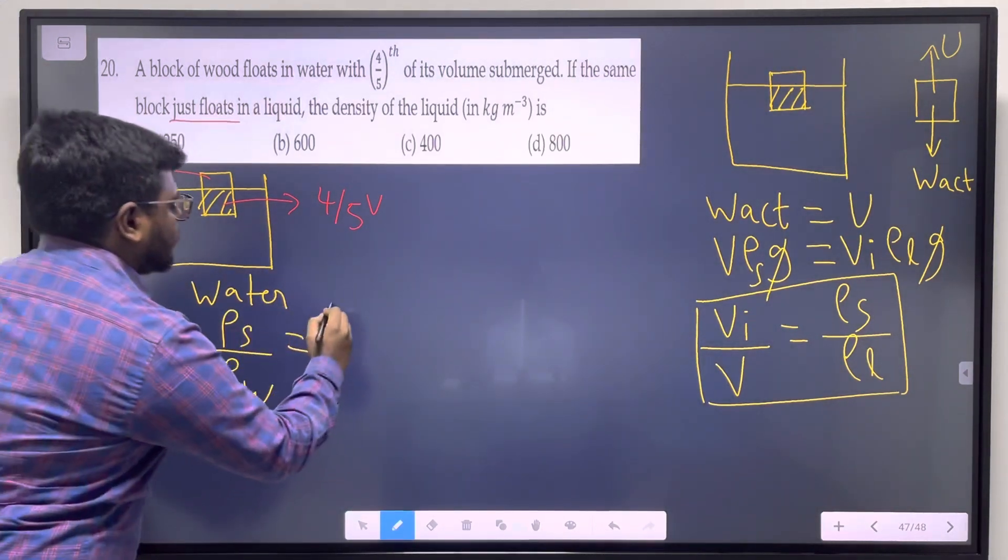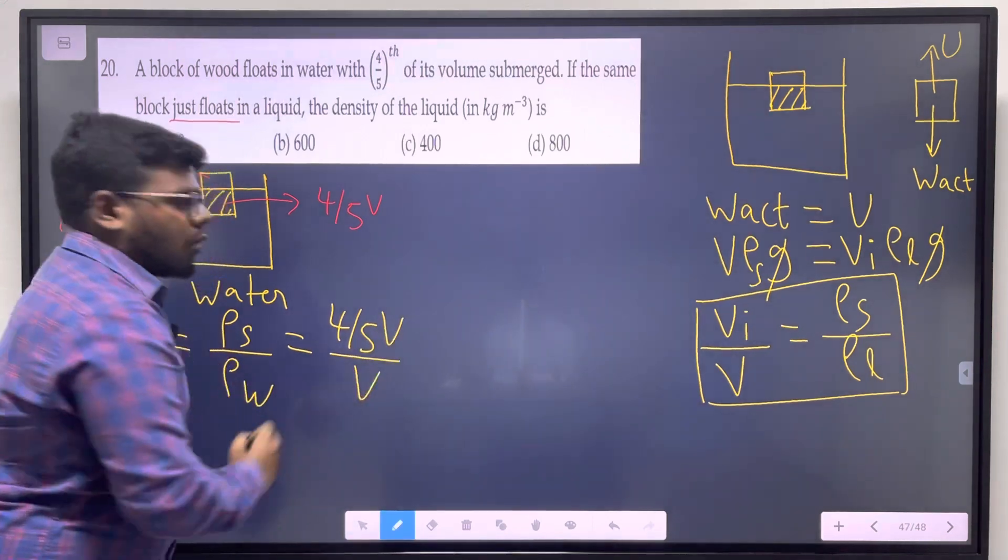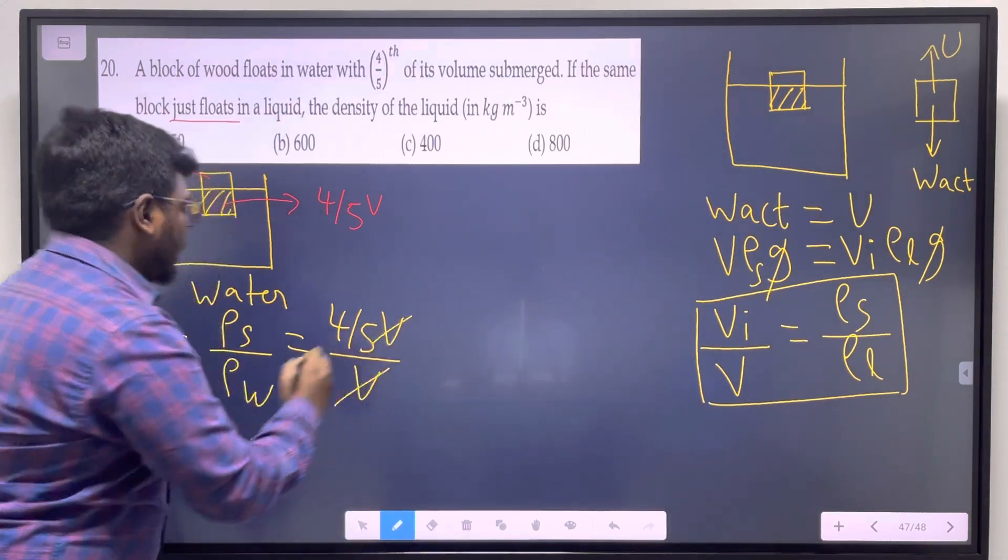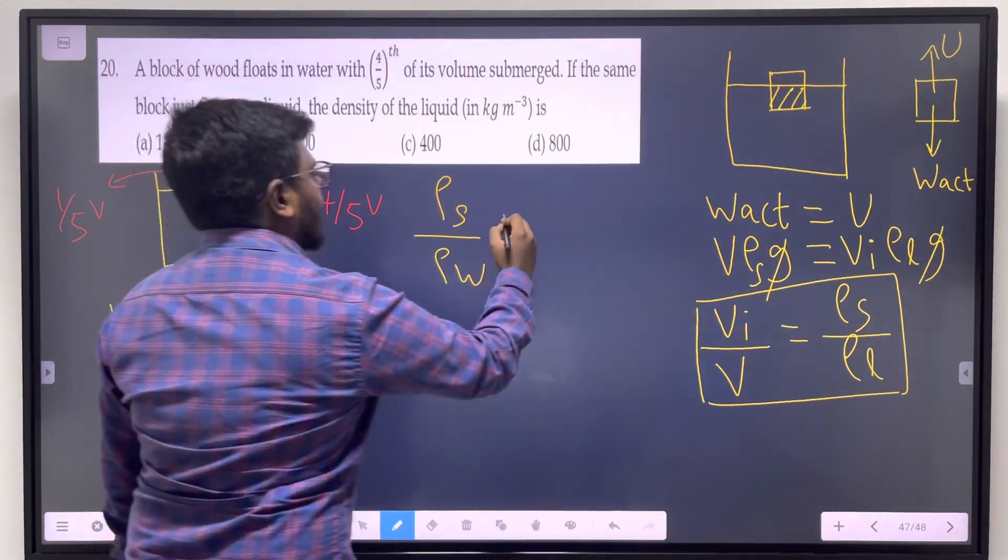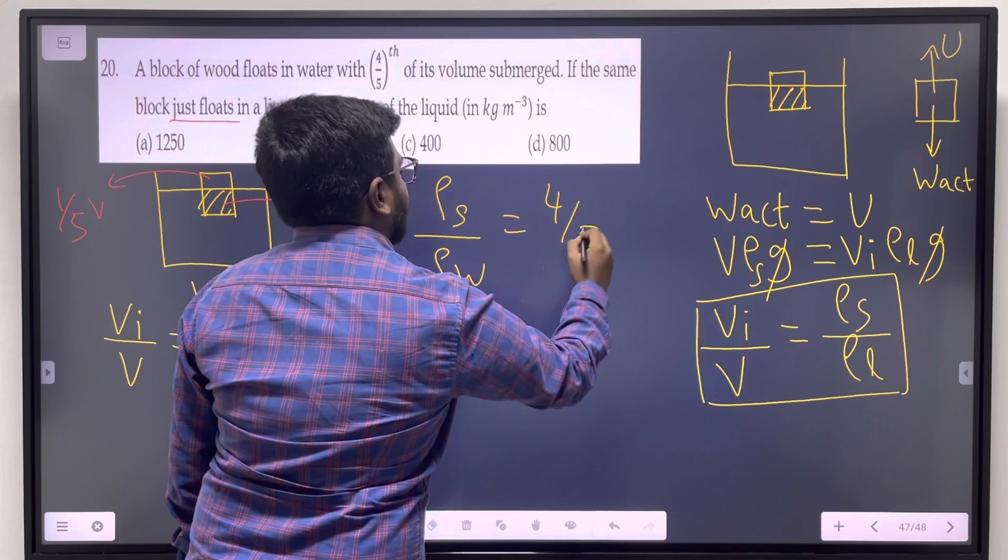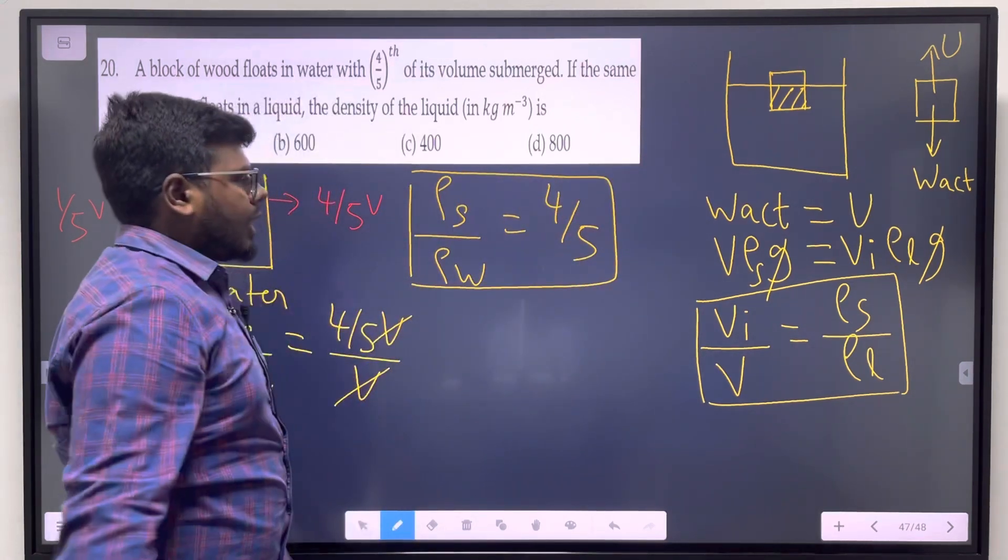Volume immersed is 4/5 V divided by total volume V. The V cancels, giving us ρ_s/ρ_w = 4/5. That is the result for the first case.